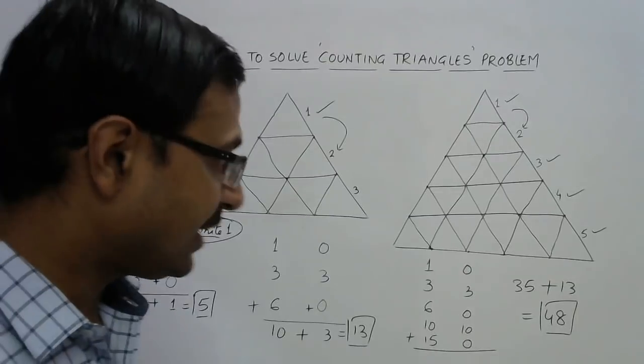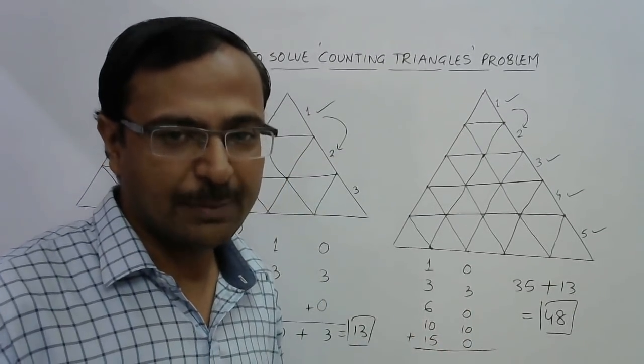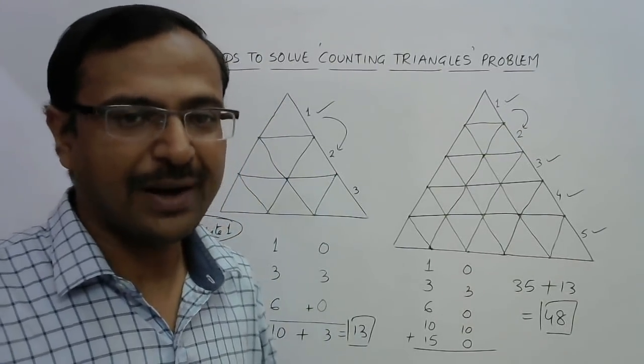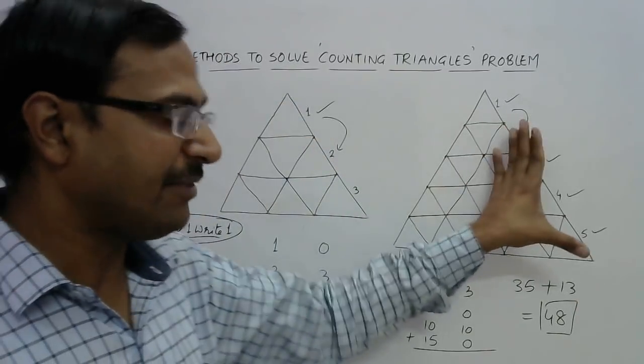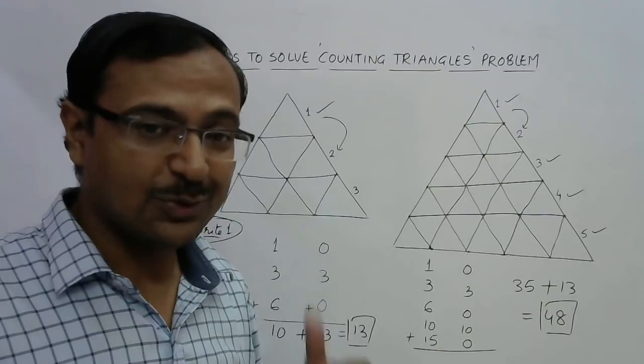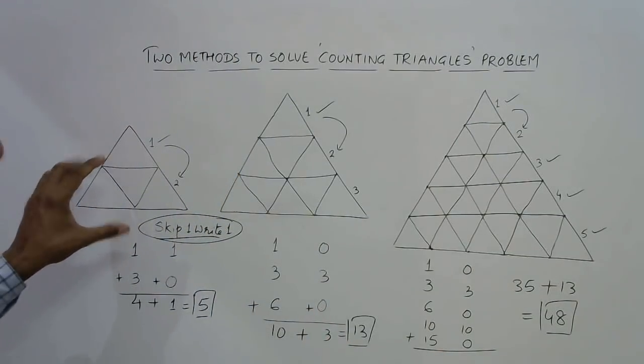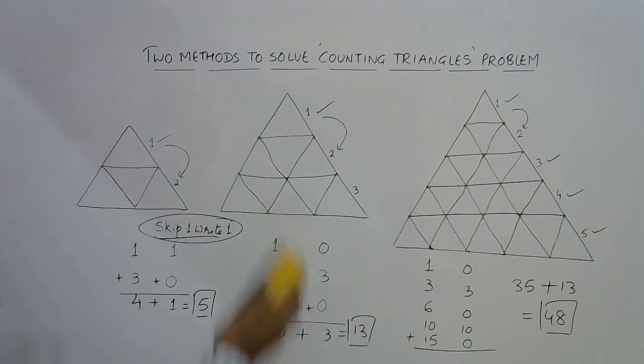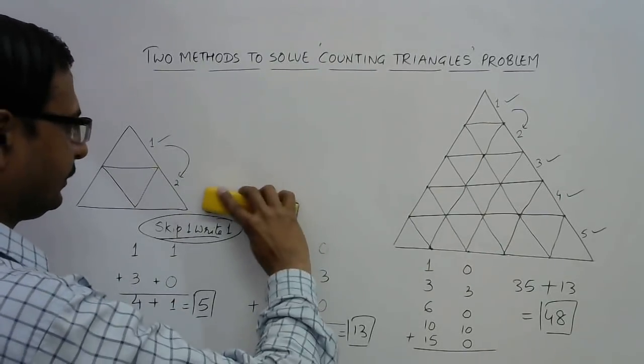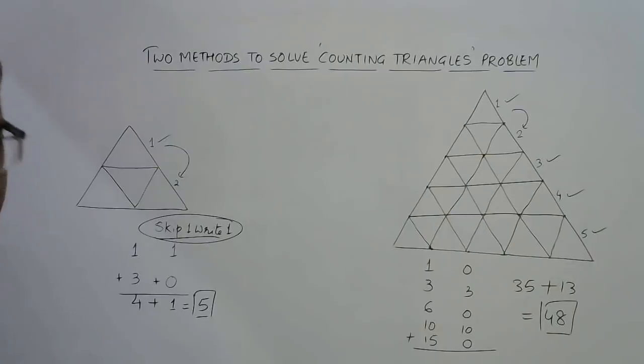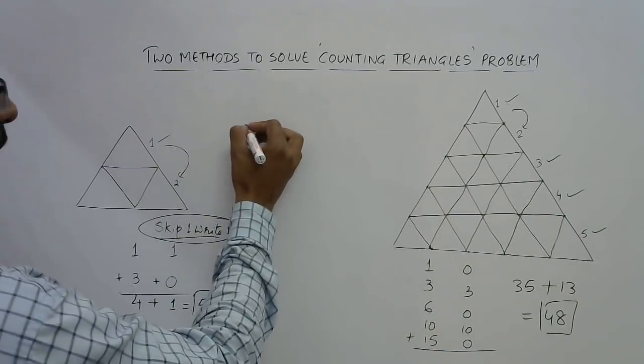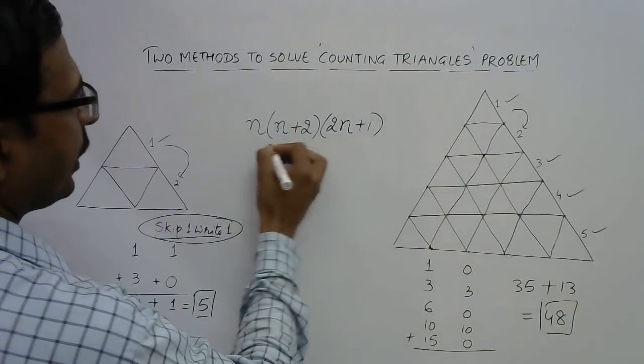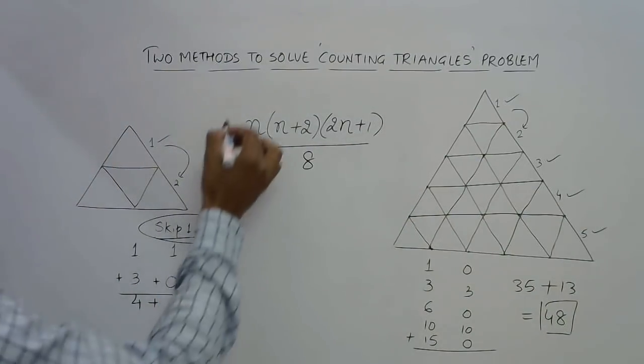Now let us see another method of finding this. But mind you, the method which I am going to tell you is applicable only for even number of triangles on each side. So 3 and 5 we cannot apply the method which I am going to tell you to these. But we can apply it here because we have only 2 triangles along the side. So let us see how we can apply this second method. You will find it in some more videos on YouTube. The formula: n into n plus 2 into 2n plus 1 upon 8.